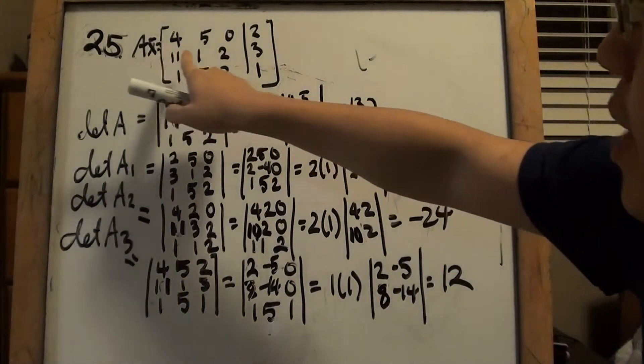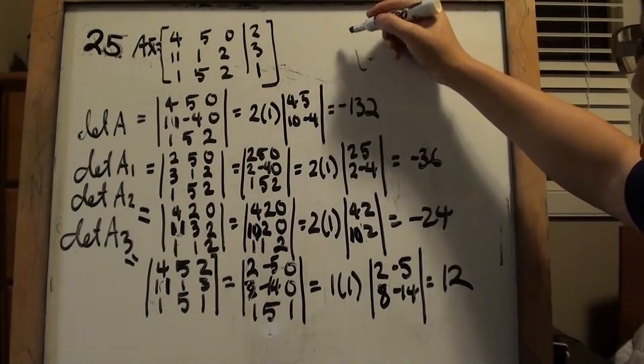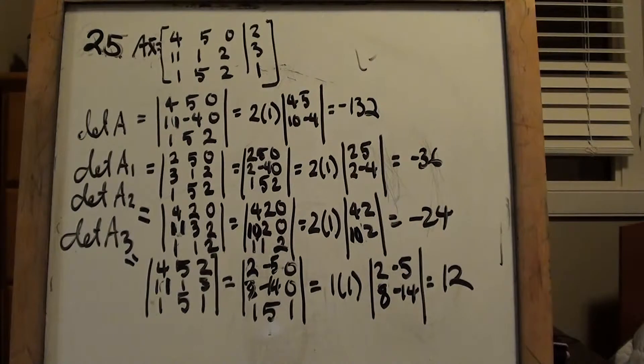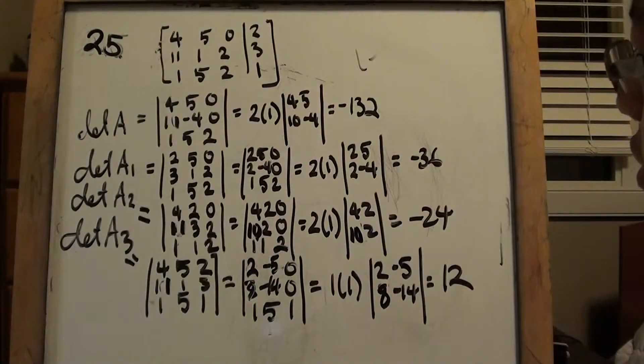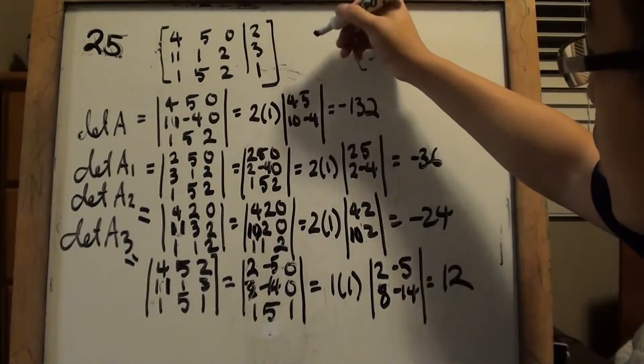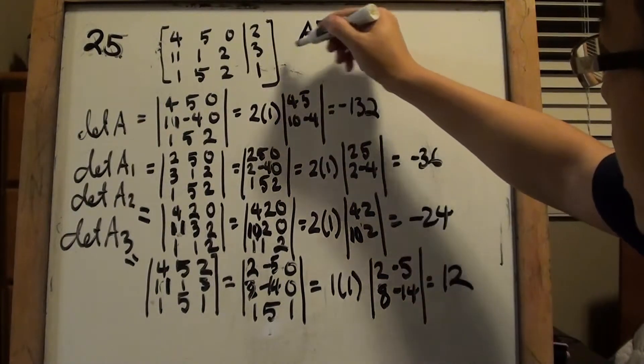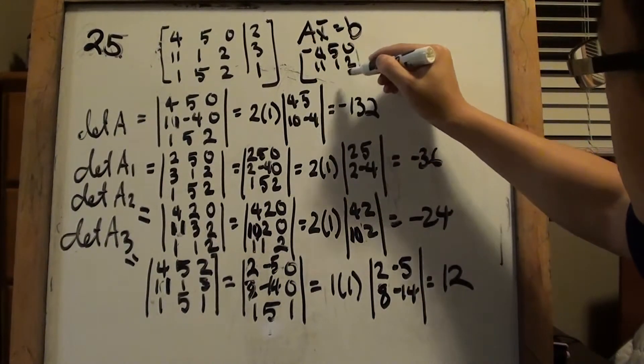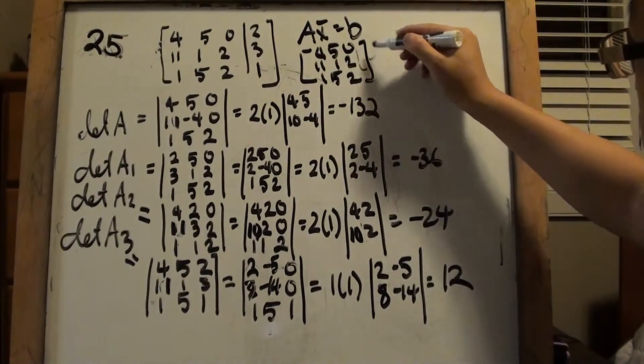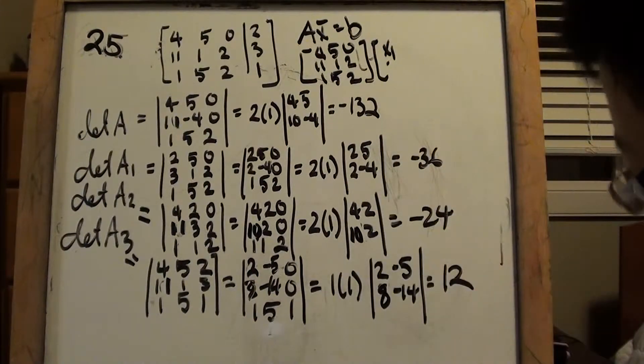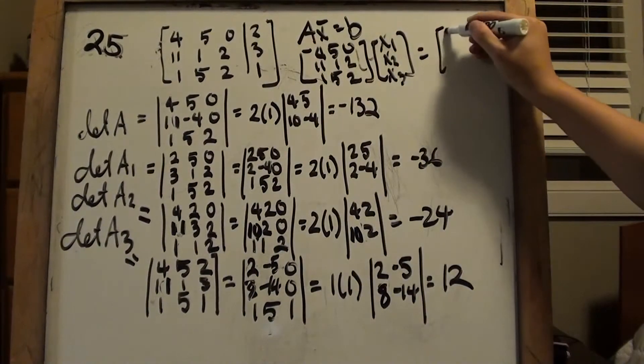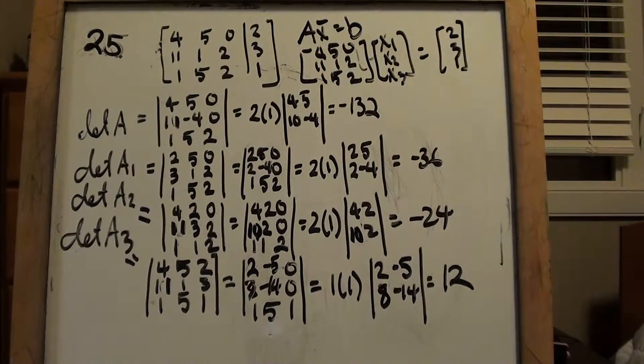All right, so this is question 25. Just be careful, sometimes I have a habit of making this equation Ax, it is not. Technically speaking, what you see here is A times vector x. Technically, all we're doing is Ax equals b. So A is going to be that thing, 4, 5, 0, 11, 1, 2, 1, 5, just so that we have a clear idea. And x is going to be the vector where it's going to be x1, x2, x3, equals to these constants, 2, 3, 1.